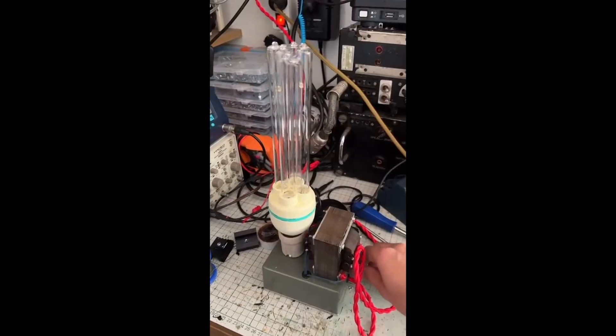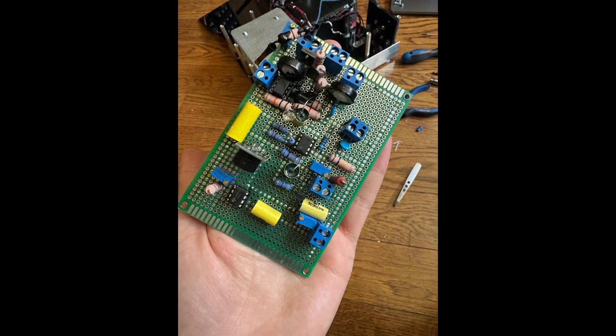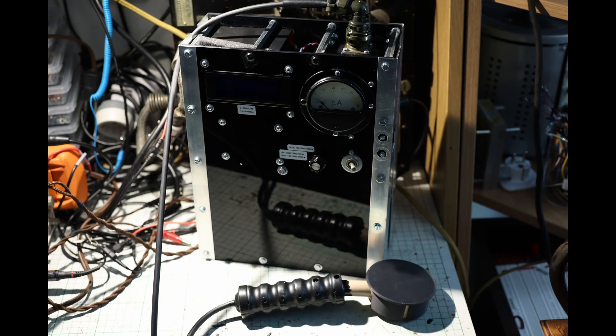After an internship at CERN last year, I became fascinated with relativity and particle physics, so I built a Geiger counter around an advanced alpha-beta-gamma radiation probe that I found on eBay.